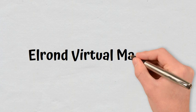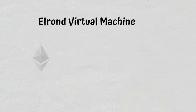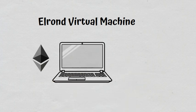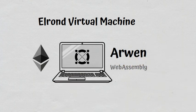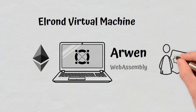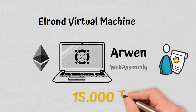Elrond virtual machine. We have encountered the virtual machine concept with Ethereum as well, but in the case of the Elrond blockchain, it is called Arwen and is built on WebAssembly. It ensures compatibility with smart contracts and allows execution speeds of up to 15,000 transactions per second.